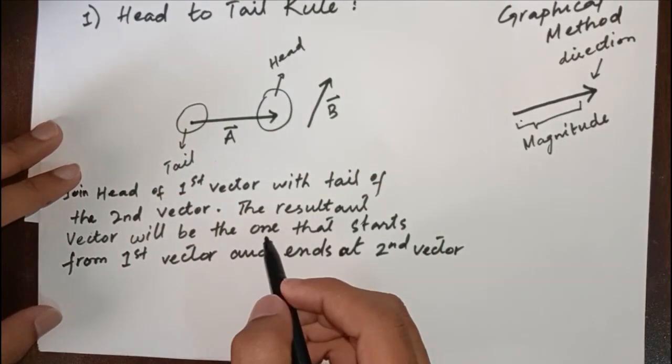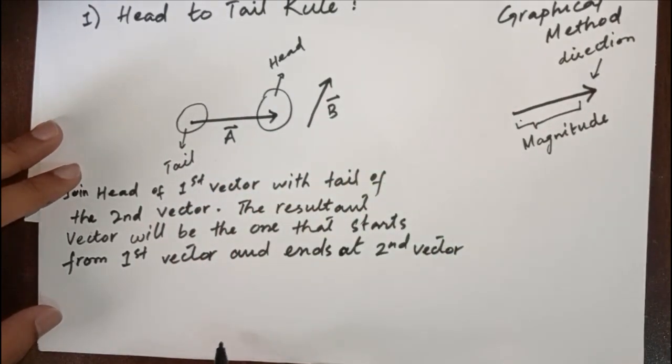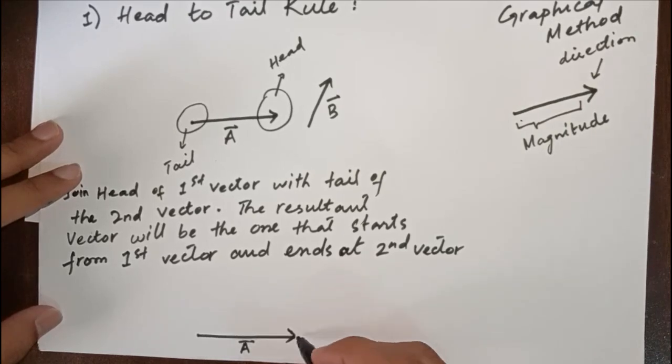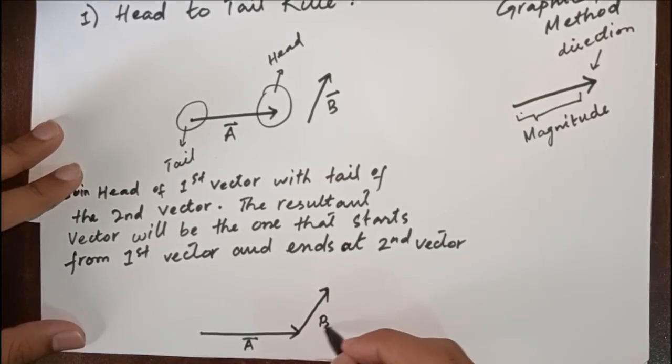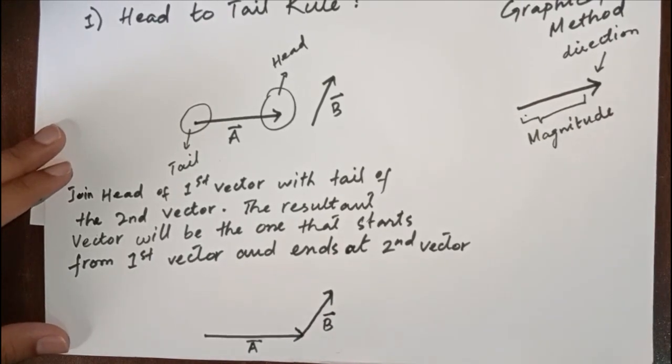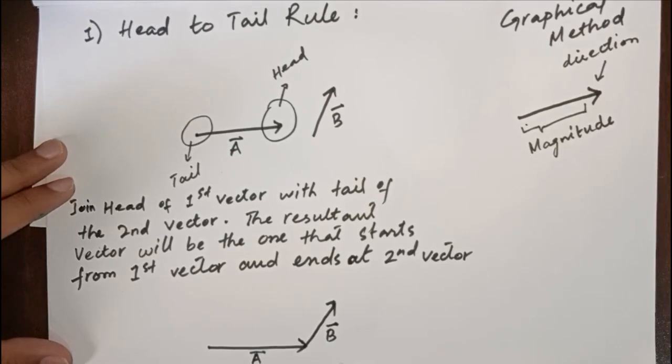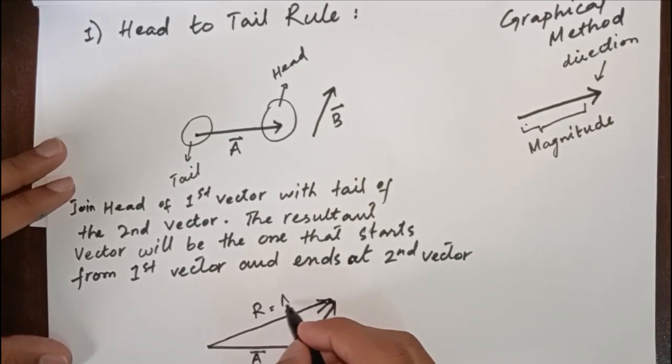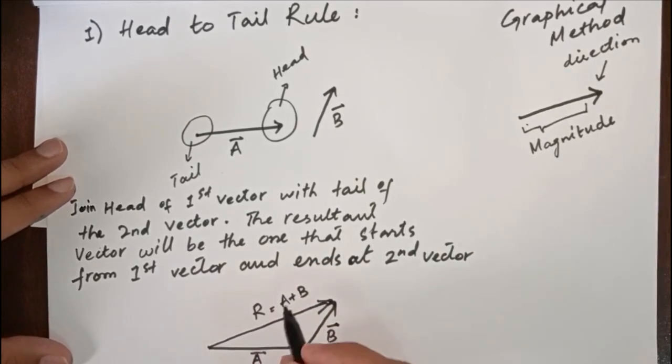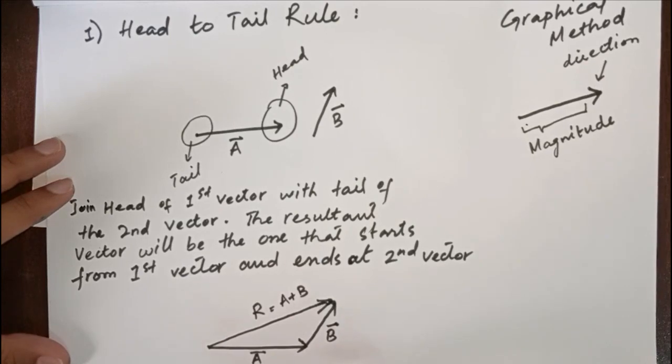Now applying these rules on these two vectors A and B, we are drawing the first vector that is A, and the second vector B will start from the head of the first vector A. So according to the rule, the resultant vector will start from the first vector A and end at the final vector B. This vector represents the resultant, or you can say this is the sum of these two vectors A and B.